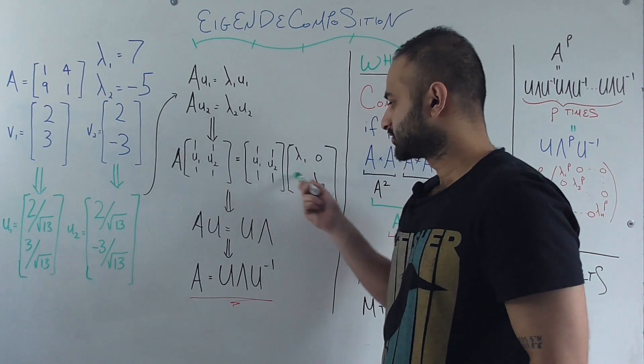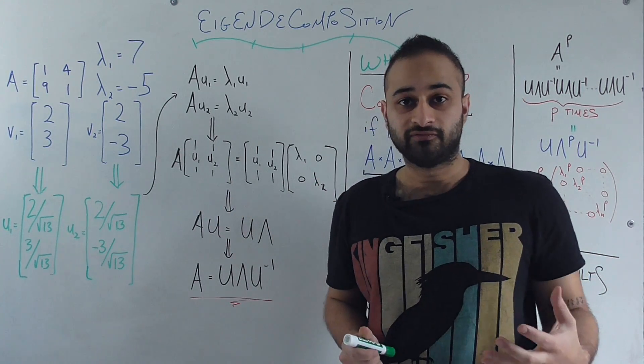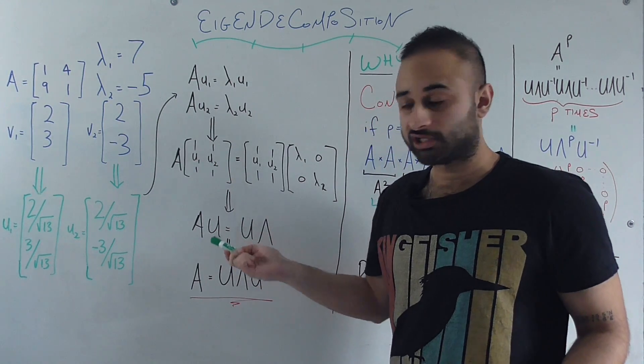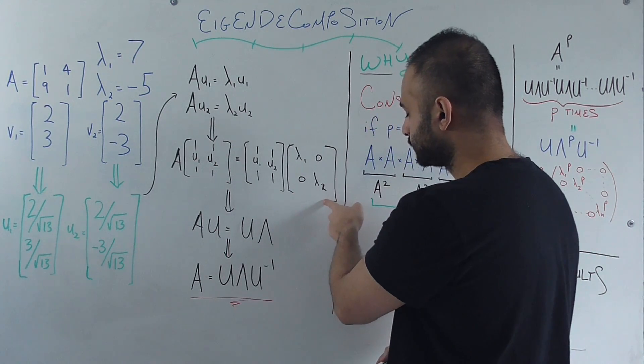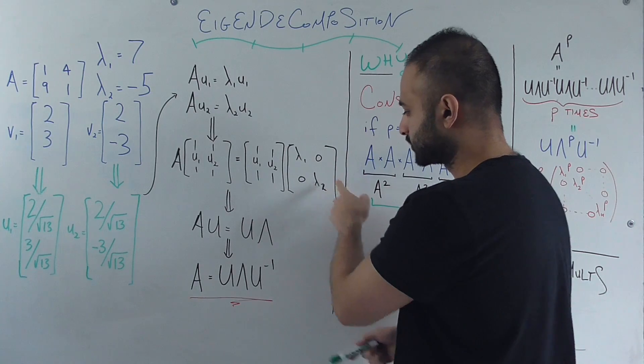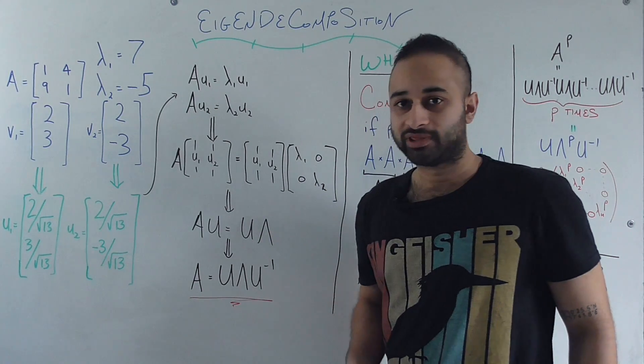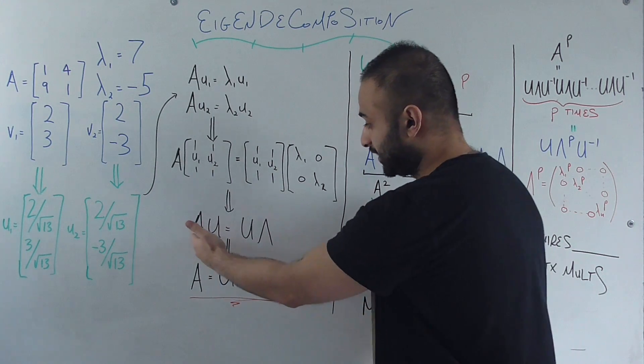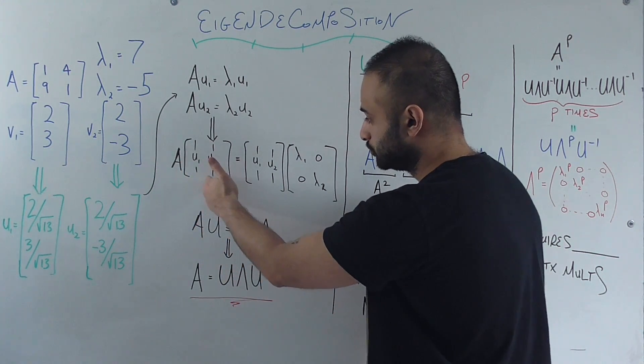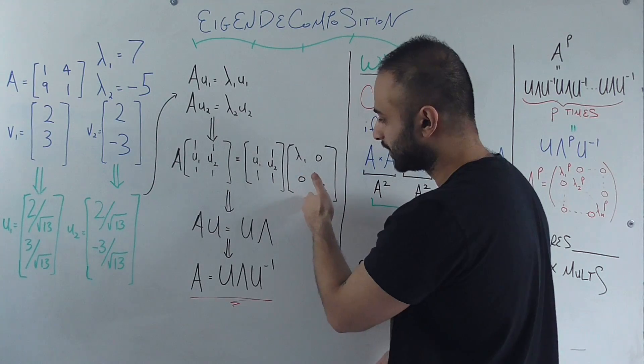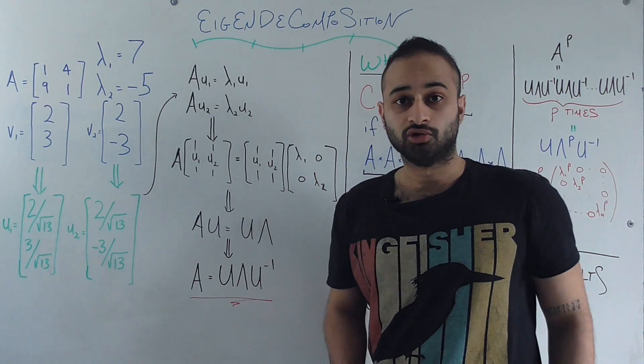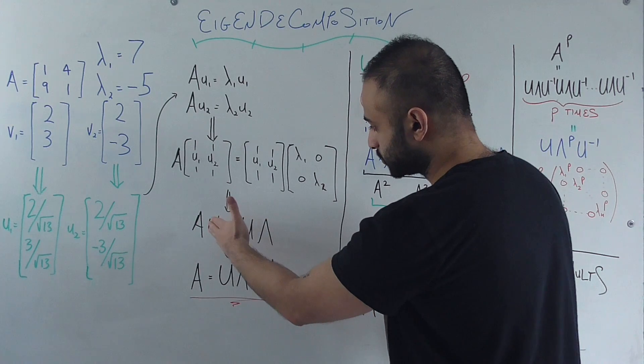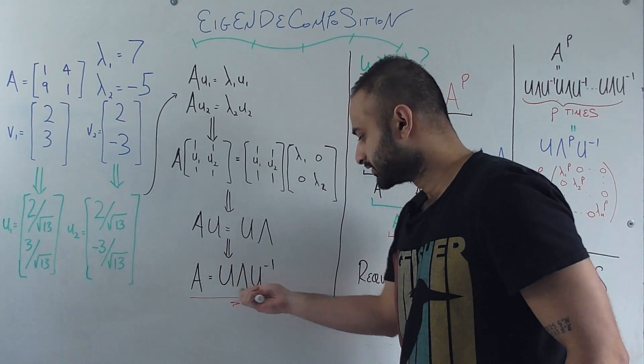Okay. So that means that we can write this in this form. Now let's give these guys a name. Let's call this U1 U2 as just big U matrix. And let's call this lambda 1 lambda 2 diagonal matrix as big lambda. So that we now have this matrix equation which is A times U is equal to U times lambda. And now what we can do to get A by itself, we can apply the inverse of U on both sides. So we can take inverse of U on this side, inverse of U on this side, and we get this.